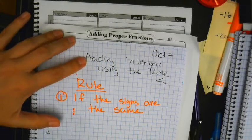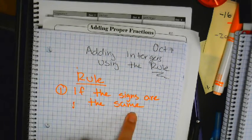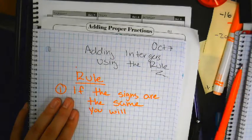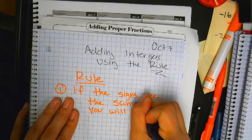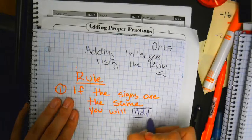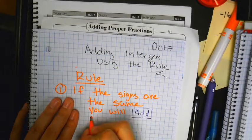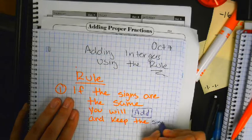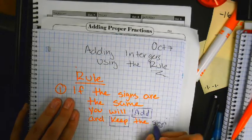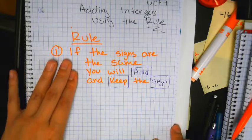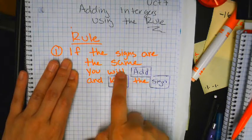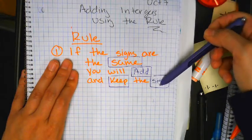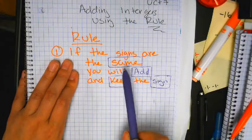The rules for adding integers. Rule number one: if the signs are the same, you will add and keep the sign. If the signs are the same — I'm going to highlight 'same' — you're going to add and keep the sign.